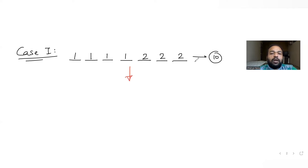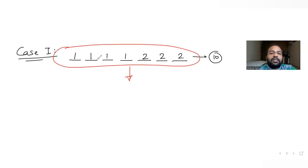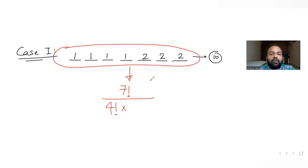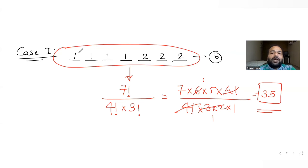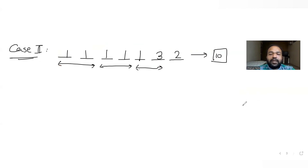For case one — four ones and three twos — I arrange seven numbers in seven places, giving seven factorial total arrangements. I divide by four factorial for the four repeated ones and by three factorial for the three repeated twos. That gives 7! / (4! × 3!) = (7 × 6 × 5) / (3 × 2 × 1) = 35. So I have 35 seven-digit integers in case one.